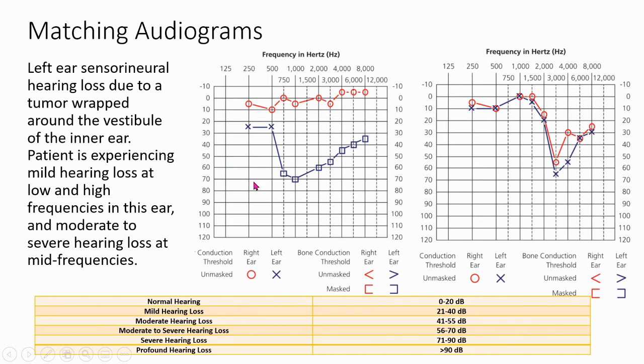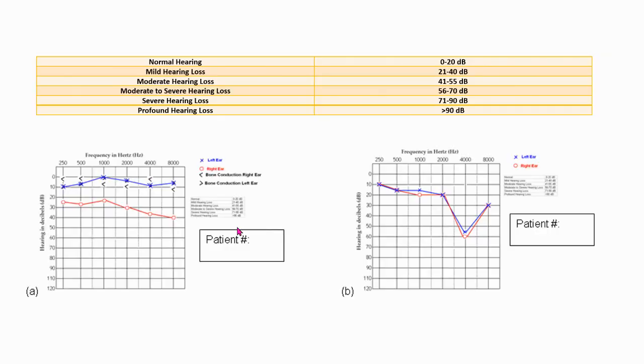We can tell that it's hearing loss in just the left ear. We can tell that it's mild hearing loss in both low and high frequencies, and we can tell that it's moderate to severe at the mid frequency. So I would choose this audiogram, and so you guys need to go forward and do the same thing.